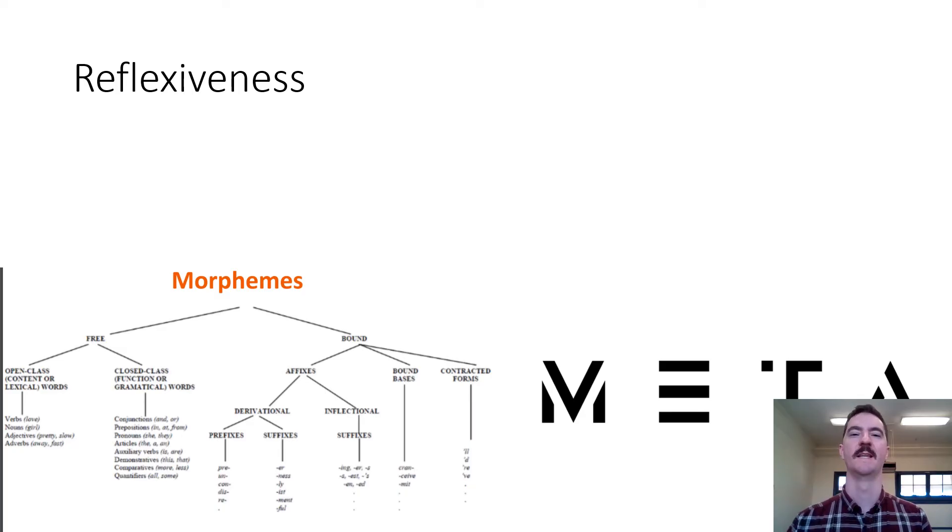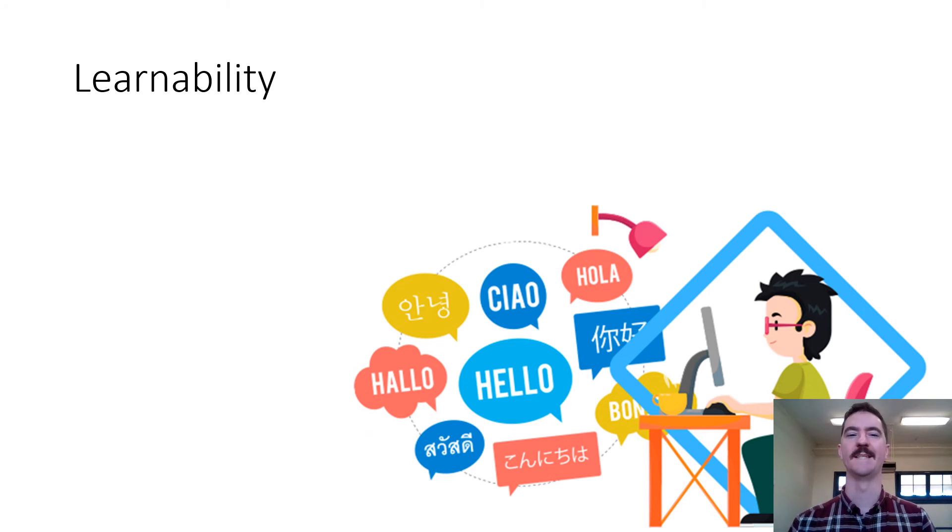Reflexiveness is basically the metalanguage, the fact that using language we can communicate about language. I can write about writing, I can speak about speaking, I can teach about speaking and writing. Linguistics itself is probably the truest representation of the reflexiveness of our language, which is that using our language we can look at our language.